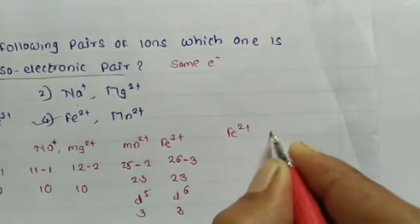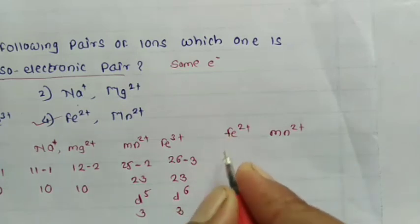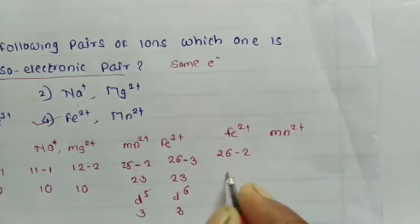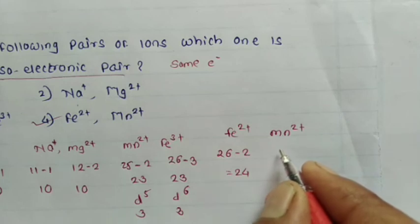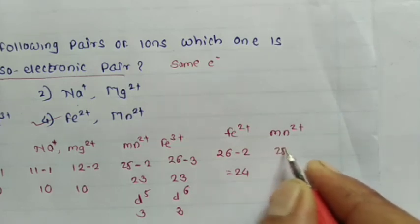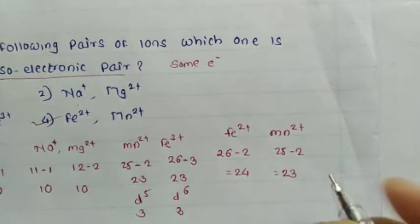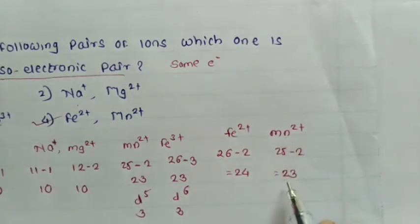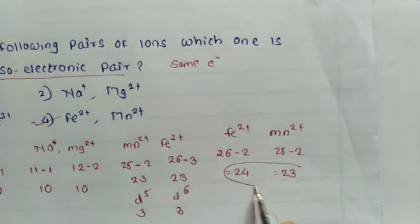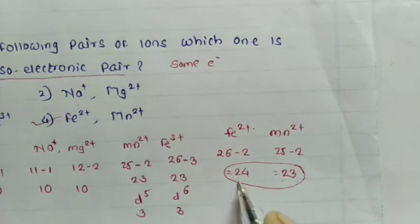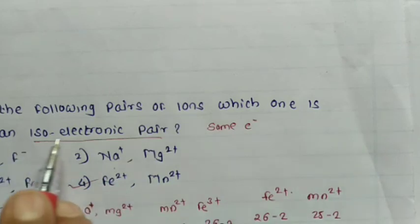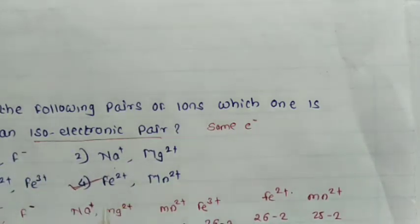Now consider Fe²⁺ and Mn²⁺. Atomic number of iron is 26; Fe²⁺ has 26 − 2 = 24 electrons. Atomic number of manganese is 25; Mn²⁺ has 25 − 2 = 23 electrons. Fe²⁺ has 24 electrons and Mn²⁺ has 23 electrons — this is a non-isoelectronic pair. Therefore, the correct answer is Fe²⁺ and Mn²⁺.